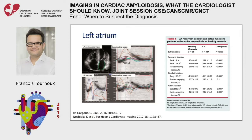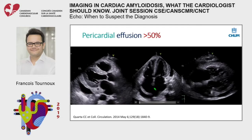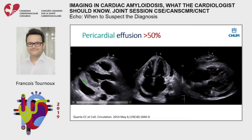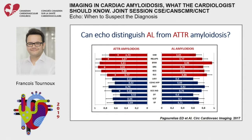The left atrium is usually enlarged, the interatrial septum is thickened, and left atrial function is already impaired — left atrium strain is an area of emerging research. More than half of patients have a small pericardial effusion, and in some patients with AL amyloidosis you can see amyloid fibril deposits within the pericardium itself, which can also help you suspect the diagnosis.